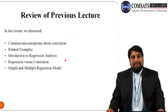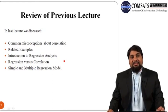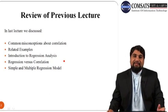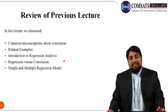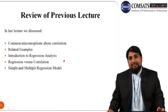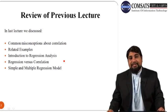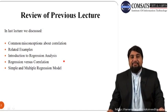This is Lecture No. 31. First, let us take a review of the last lecture. In the last lecture, we discussed common misconceptions about correlation and how people use wrong values of correlation in different situations to deceive other individuals or laymen. We also discussed related examples about common confusions regarding correlation. In the later half, we discussed regression analysis, introduced it, and differentiated between regression and correlation. We also discussed two types of regression models: simple regression and multiple regression.